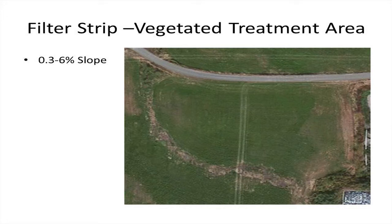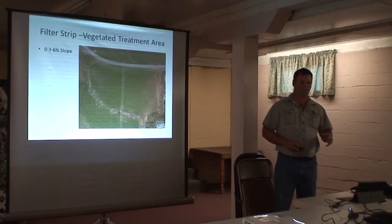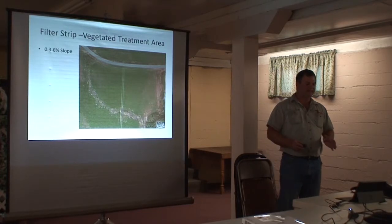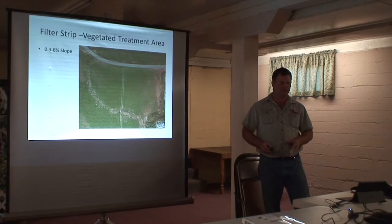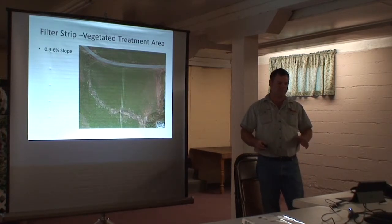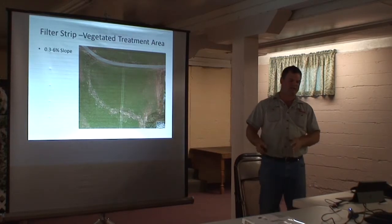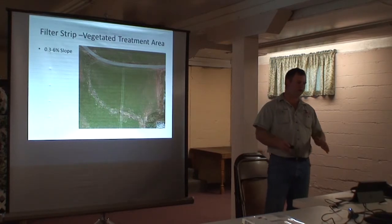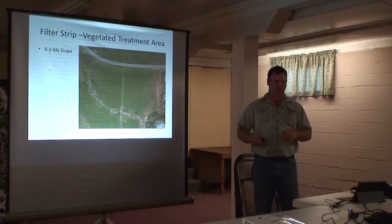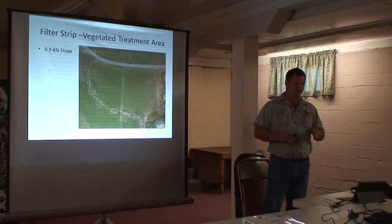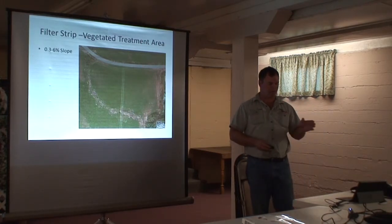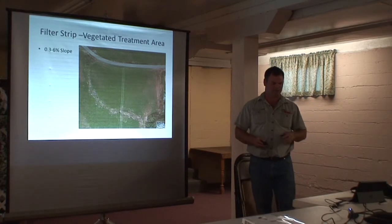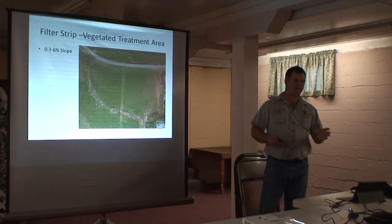One of the things with filter strips and vegetative treatment areas: we've come up with setbacks for applying manure. At one time we were basing that totally on the NRCS filter strip standard, and the filter strip was dually used as a setback and a vegetative treatment area. Now the standard for vegetative treatment area is specifically for runoff control from an area, based on slope and nutrient content of what is entering that area — it's not a filter strip along the edge of a field. So vegetative treatment areas and filter strips are not necessarily interchangeable in NRCS terms.